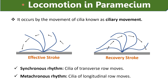Locomotion in paramecium occurs by the movement of cilia, known as ciliary movement. It can move forward and backward. The back and forth movements of cilia are also known as effective and recovery stroke. During the effective stroke, the cilium bends and beats against water, bringing the body forward and sending the water backward. During the recovery stroke, the cilium returns to its original position. Although cilia move in groups, not all cilia move at the same time. When cilia of a transverse row move together, it is known as synchronous rhythm, whereas when cilia of a longitudinal row move one after another, it is known as metachronous rhythm.